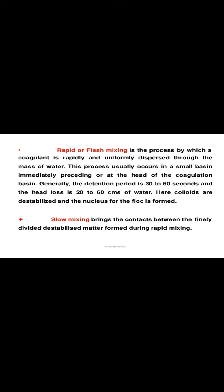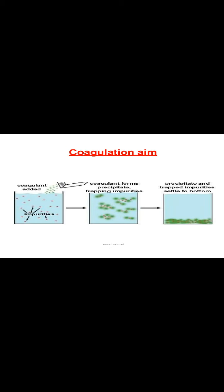Mixing brings the coagulant into contact with impurities present in water. The coagulant is added and forms a precipitate trapping impurities — these clump together and increase in size, forming flocs. As density and size of particles increase, they easily settle down at the bottom.